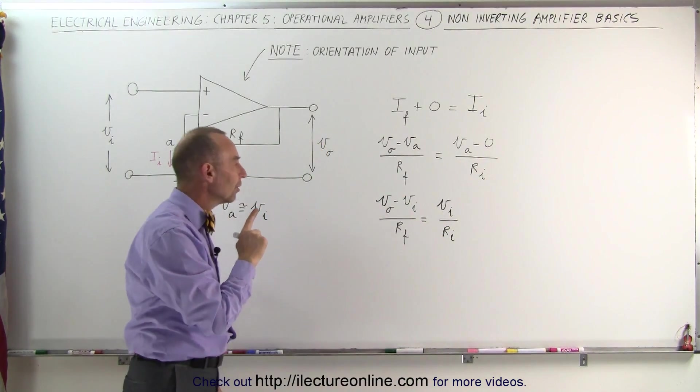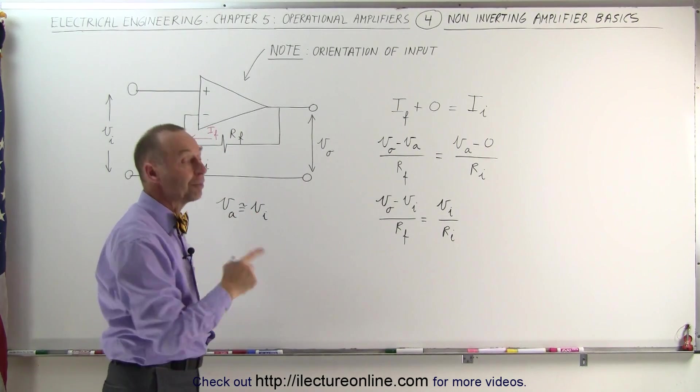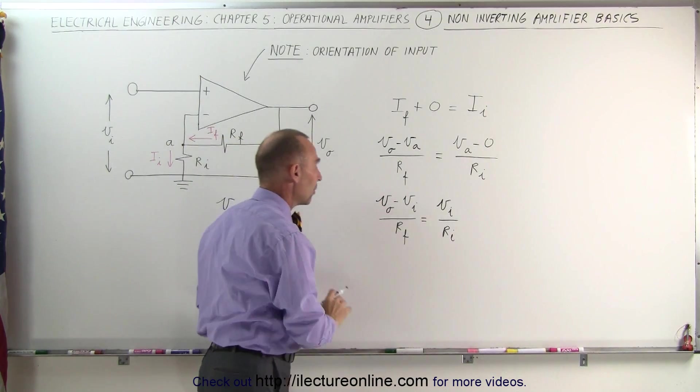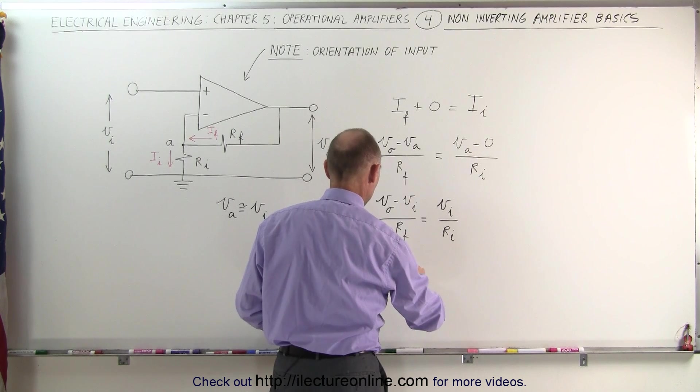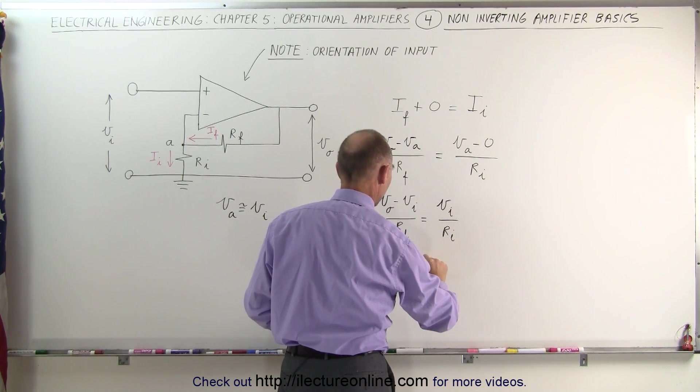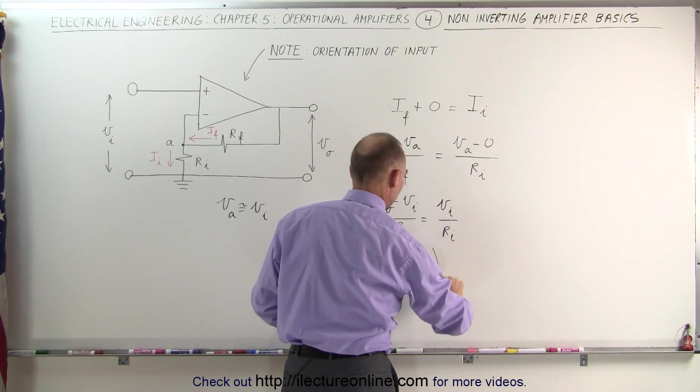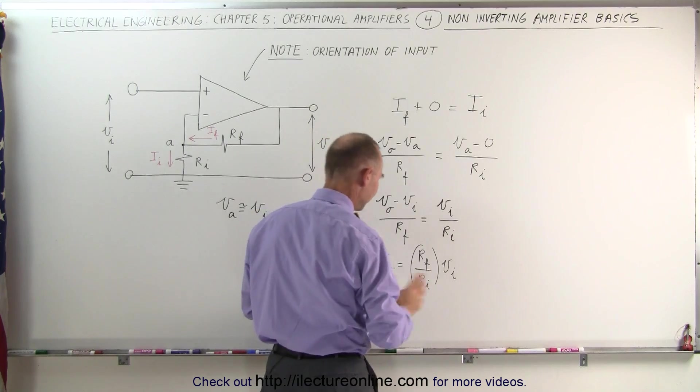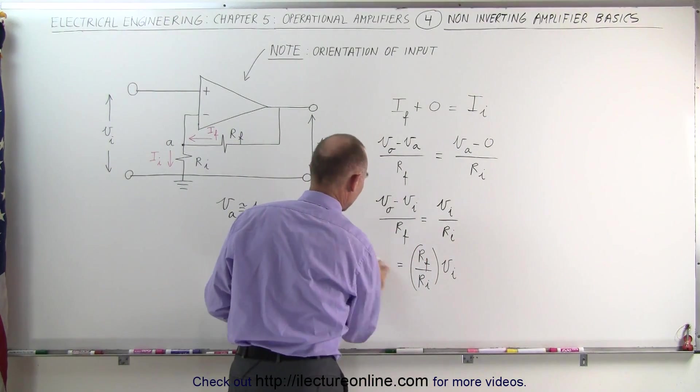Now what I want to do here is try to find the output voltage in terms of the input voltage. Which means I need to isolate V sub O somehow. So let me cross multiply this here. We get V sub O is equal to the ratio of R sub F divided by R sub I multiplied times V sub I, and then, well, let me do it in two steps otherwise I might be confusing people.